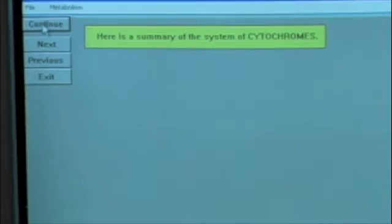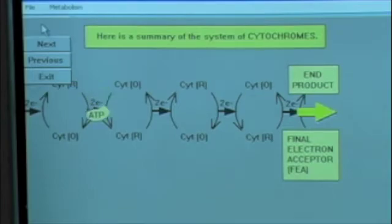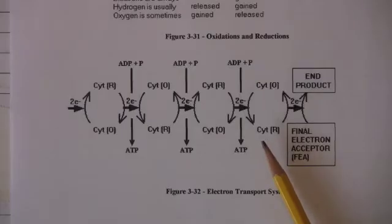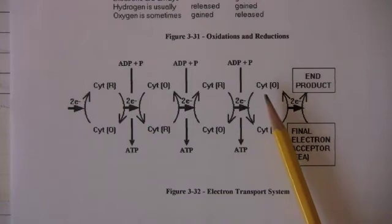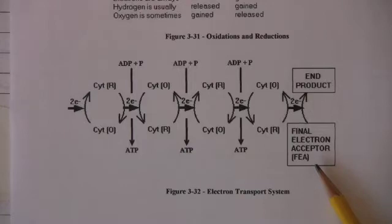Here's a summary of the role of the cytochromes in the electron transport system. Finally, the last cytochrome has to get rid of its electrons so it can become re-oxidized and it gives up its electrons to what we can call a final electron acceptor. Now this final electron acceptor accepts the electrons, becomes reduced into an end product.